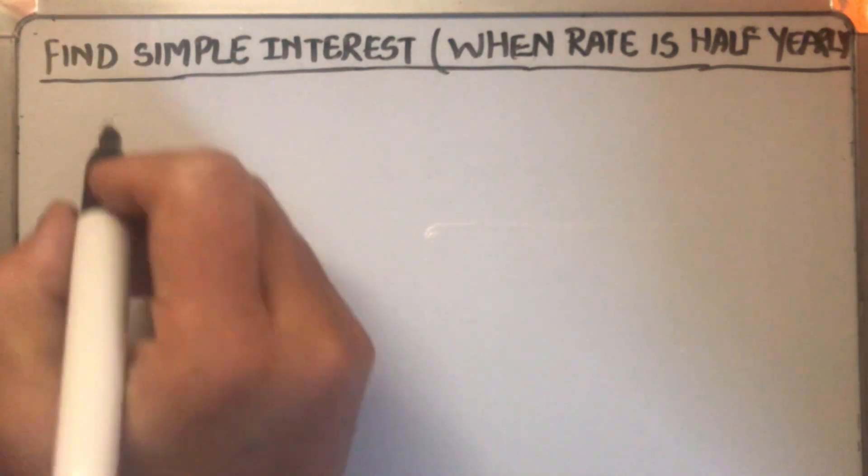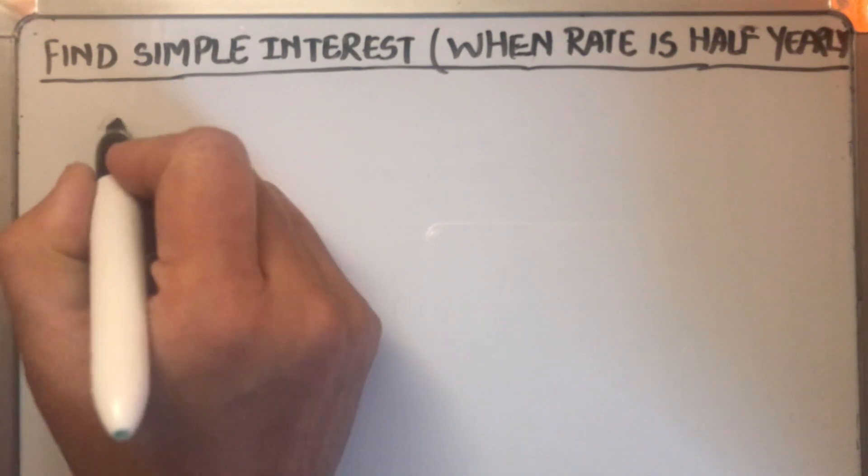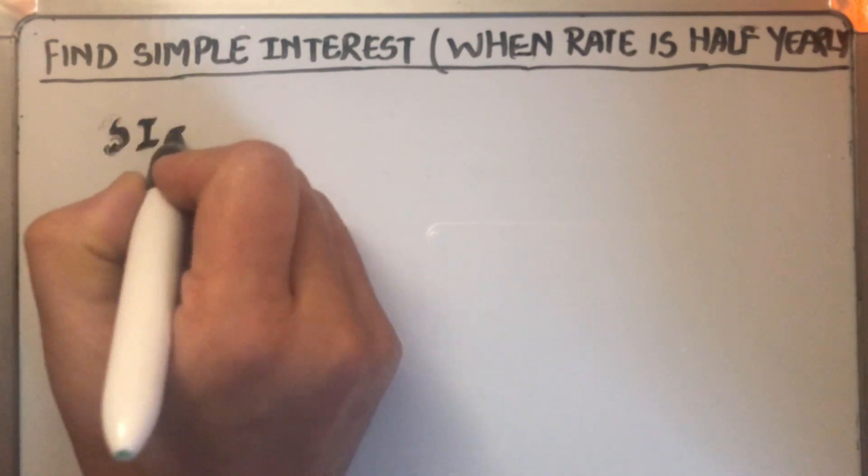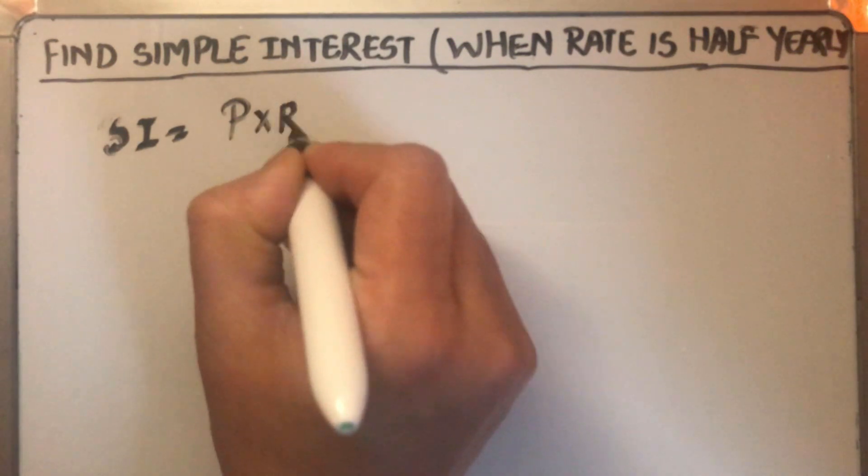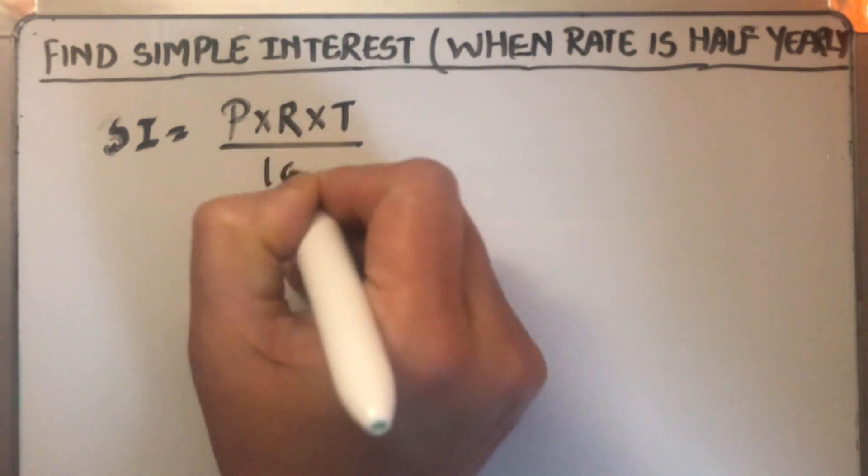So our formula for simple interest is simple interest on any amount is equal to P times R times T over 100.